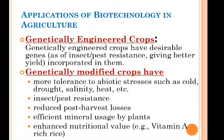GM crops can also be used as alternate products in the form of starches, fuels, and medicines. In ornamental plants like rose and petunia, if we alter the gene we can produce a blue color variety — producing different varieties of ornamental flowers based on demand. We can also produce pharmaceutical compounds like human insulin, interferon, and blood clotting factors using transgenic plants.